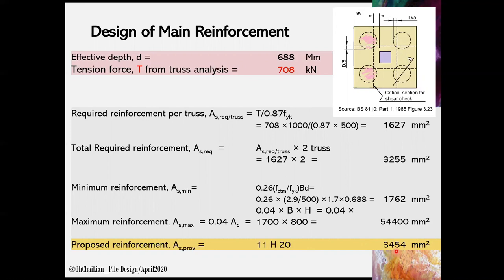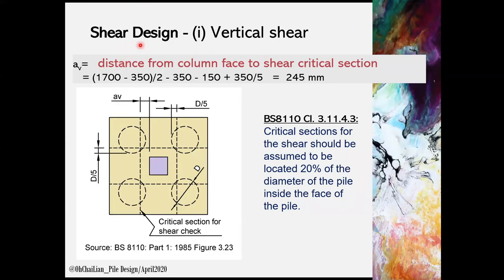Next, we can perform shear design for the pile cap. There are total 3 checks in shear, mainly vertical shear, punching shear, and maximum shear. The vertical shear is checked against the critical section. As suggested in BS8110, Clause 3.11.4.3 is to be assumed to be located 20% of the diameter of the pile inside the face of the pile, or D over 5, as illustrated in figure 4. AV is the distance from the column face to the shear critical section.